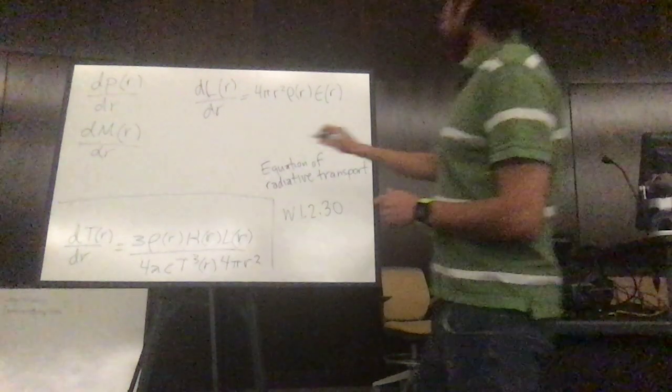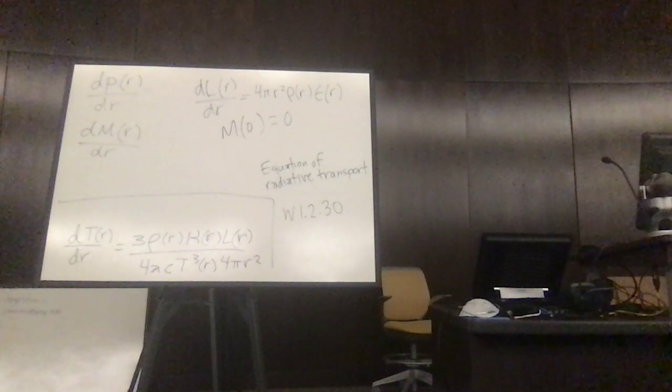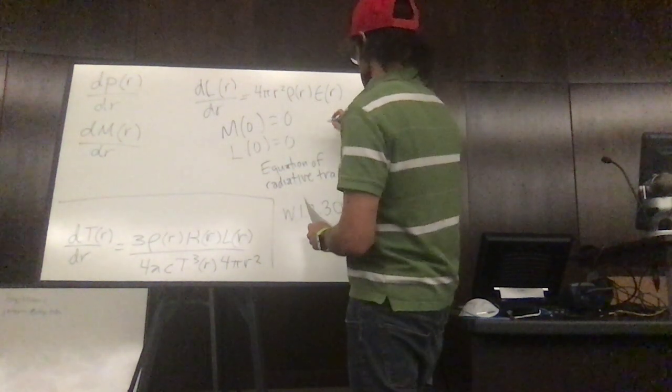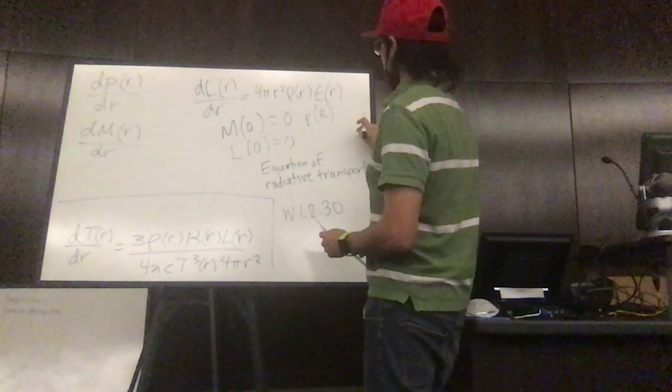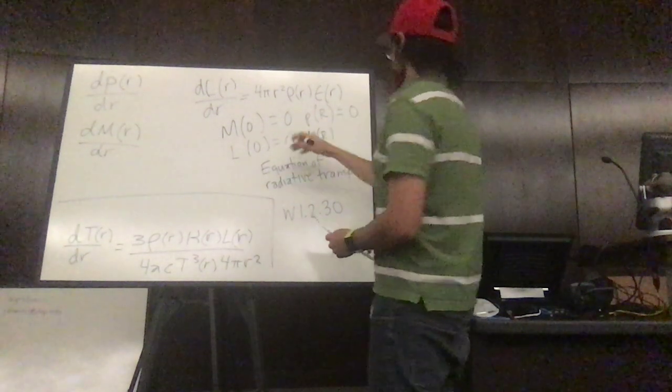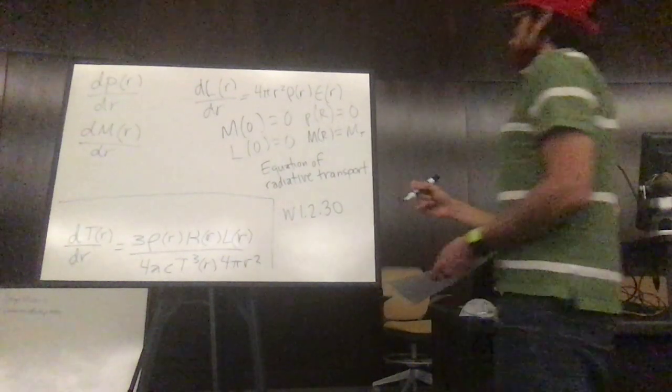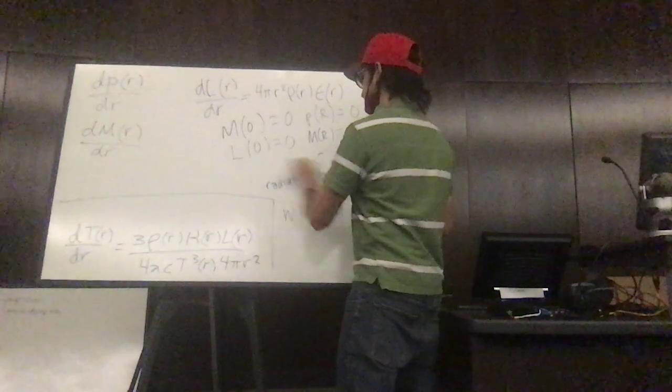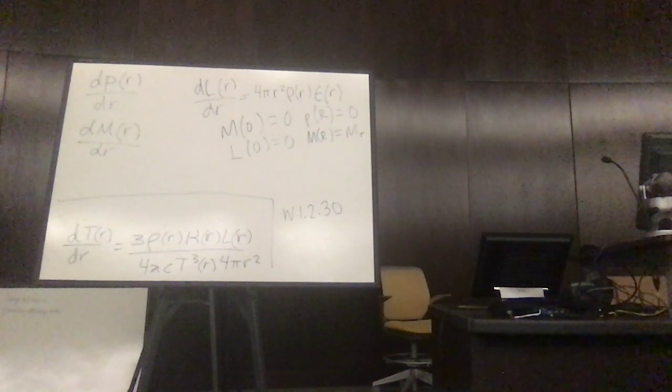The boundary conditions that you had are mass zero, zero, the luminosity at zero is going to be zero also. And then the pressure at the end of your sphere is zero, and the mass at the end is the total mass. So these are the four equations that describe all stars.